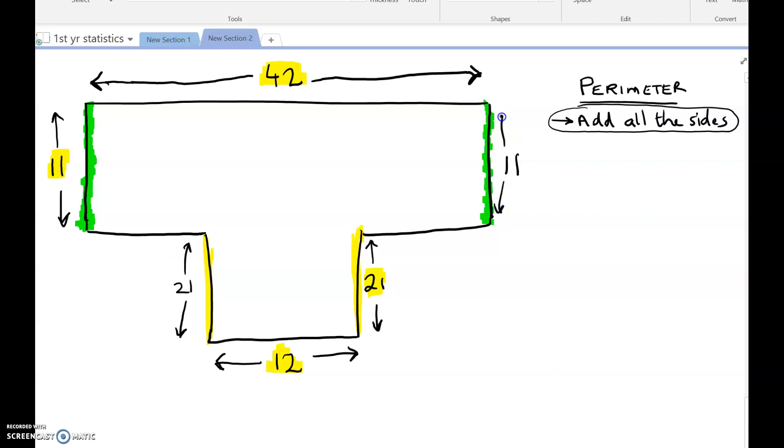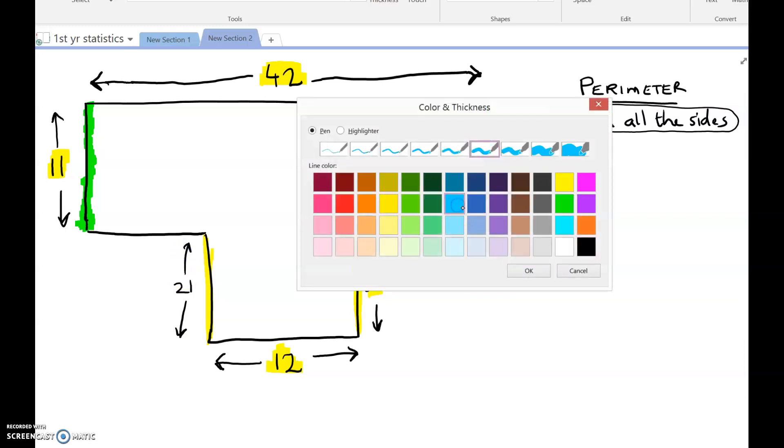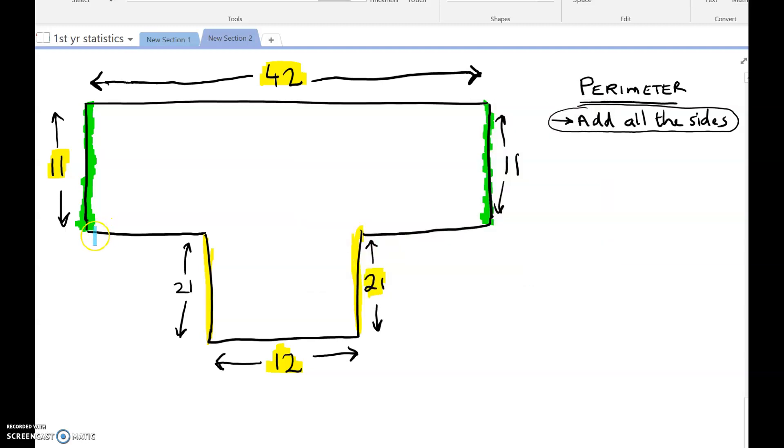Now what else are we missing? This is the hard bit now coming up. We're missing, let's get a different color highlighter for this, we're missing this side and we're missing this side.